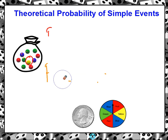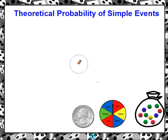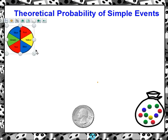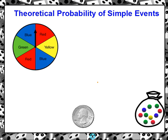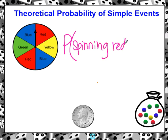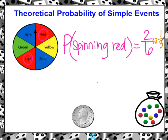Let's switch it up and move to the spinner. Let's talk about some probabilities with this spinner. We want the probability of spinning a red. You look at how many of them are red — there are two that are red out of six total. So the probability of spinning a red would be two out of six. We can simplify this by two, so the probability would be one-third.